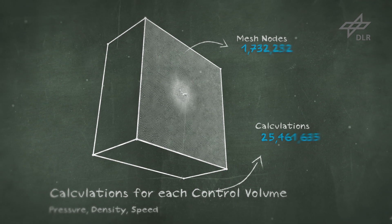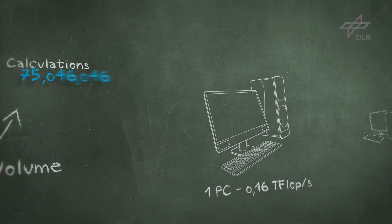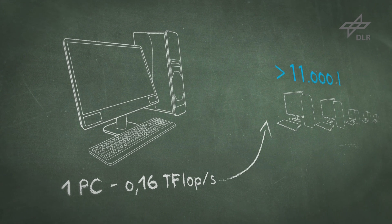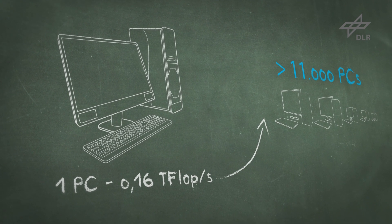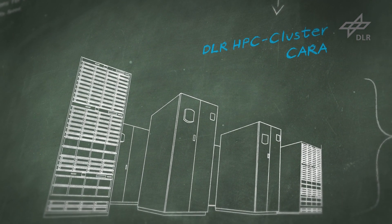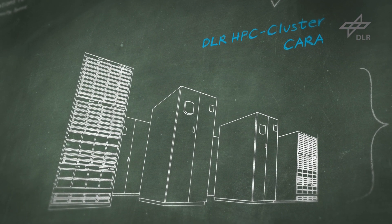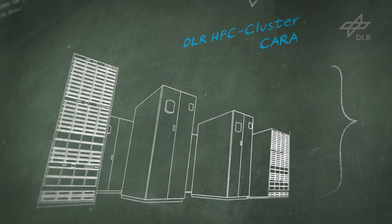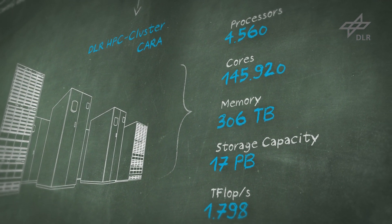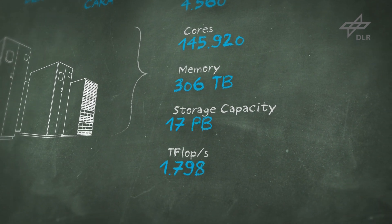That enormous calculation effort is far too much for a home computer to manage. Several thousand desktop PCs would be needed for especially complex simulations. Therefore, the German Aerospace Center has a powerful computer available, and its high capabilities make it possible for scientists to carry out the required calculations.